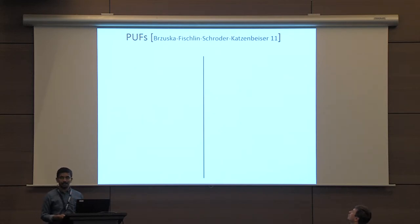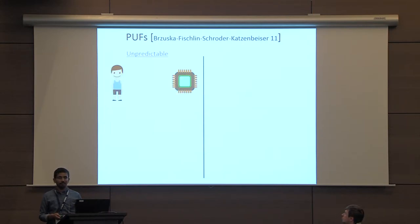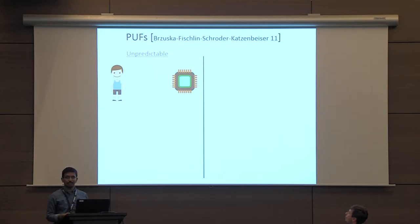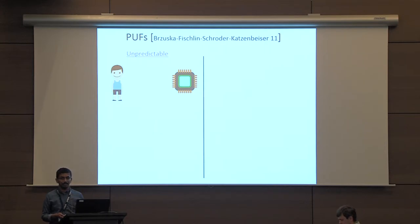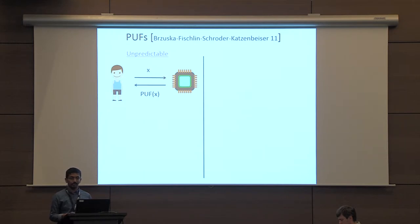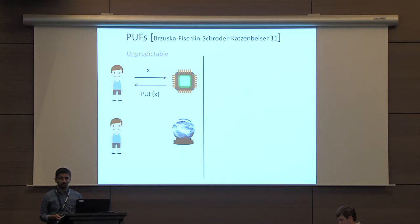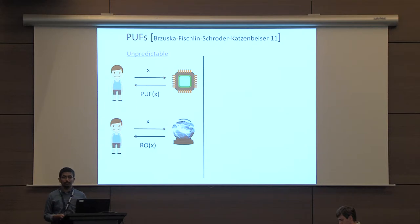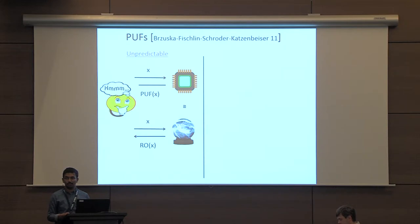PUFs were first studied in the context of cryptographic protocols by Brusca and others, and they required two properties from any ideal PUF. The first is unpredictability: the output of a PUF must be unpredictable. If some party queries a PUF on some value X, the output should be computationally indistinguishable from the output of a random oracle on the same input X — that is, computationally indistinguishable from a uniformly random string.